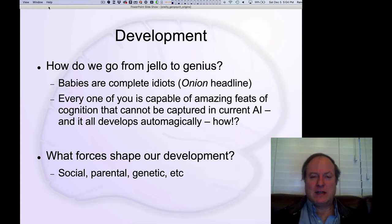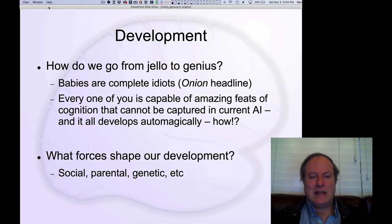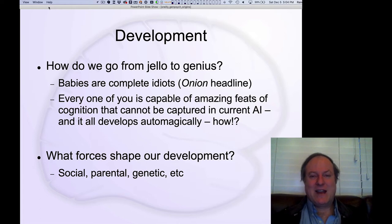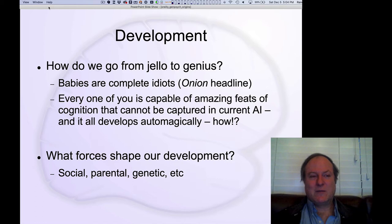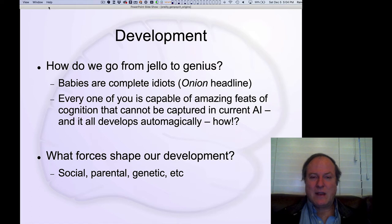We're going to turn to understanding this process of development. This is really complicated to understand in detail, so we have a lot of big picture understanding at this level. The key question is: how do we go from this initial jello-like construction of the brain to genius? Everybody, at some level, is a genius if you think about all the things you can do, especially compared to people from 100 years ago.